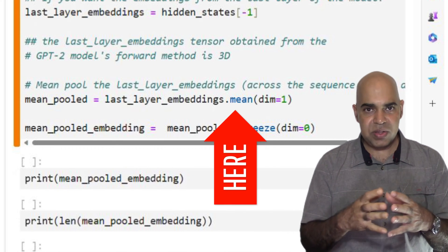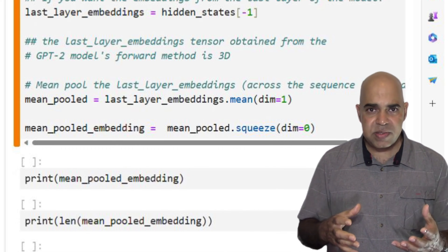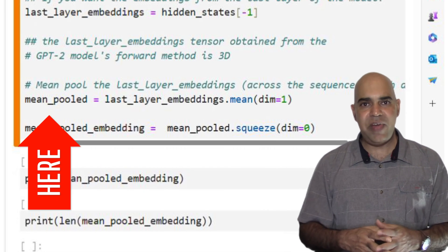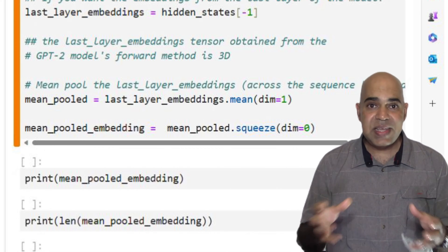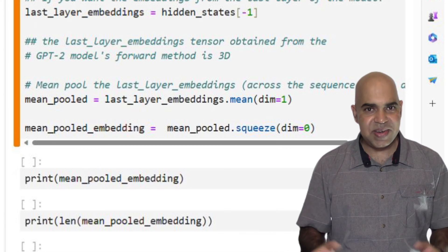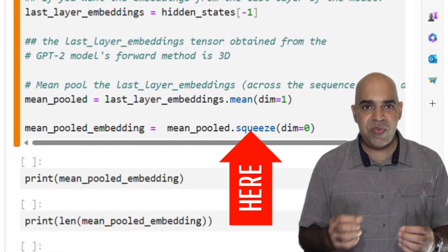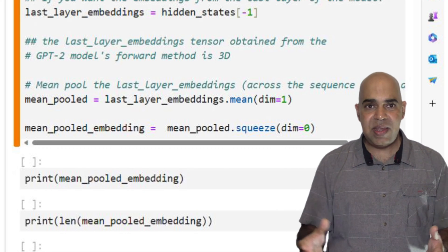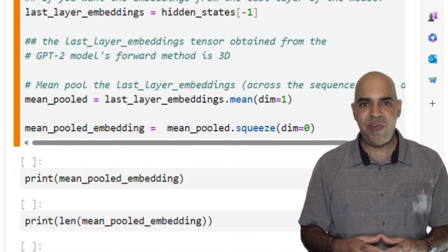We average this along the sequence length, which condenses the information into a single vector. That single vector is still inside another vector, giving an illusion of a 2D data structure. So we remove any unnecessary dimensions to get a clean one-dimensional embedding vector.